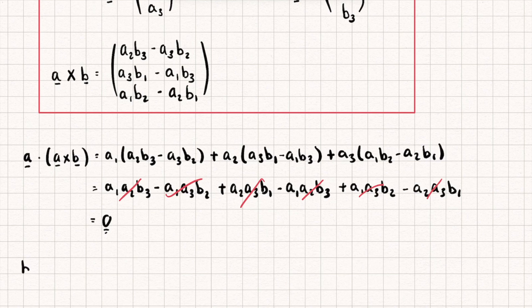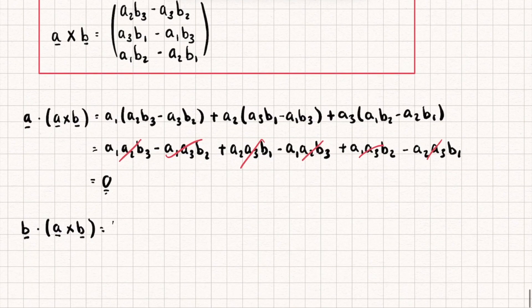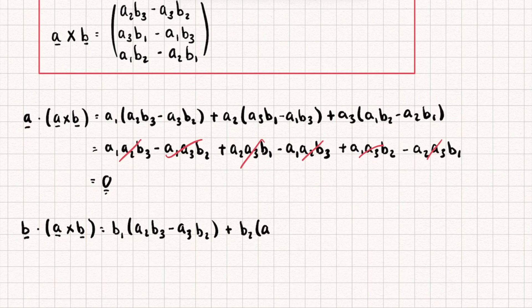Let's now do the exact same thing but with our vector b. So let's calculate the vector b dotted with the vector a cross b. So in a similar way we're going to get b1 multiplied by a2b3 minus a3b2 plus b2 multiplied by a3b1 minus a1b3 plus b3 multiplied by a1b2 minus a2b1.